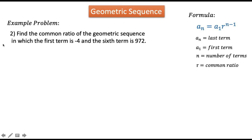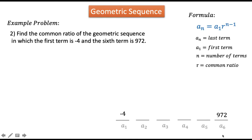In problem 2, find the common ratio of the geometric sequence in which the first term is negative 4 and the sixth term is 972. Our a sub 1 is negative 4 and our a sub 6 is 972. We need to find r, the common ratio. Our n is 6, and our a sub n, which is a sub 6, equals 972.